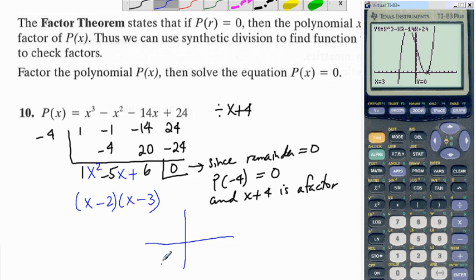So if we are going to re-graph the graph over here, the y-intercept is at 24. When x is 0, y is 24. We have an x-intercept at negative 4 and 1 at 2 and 1 at 3.